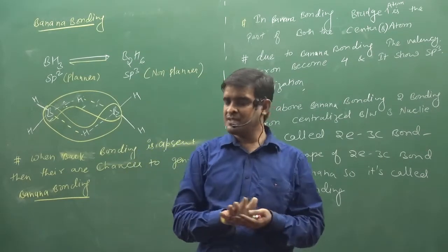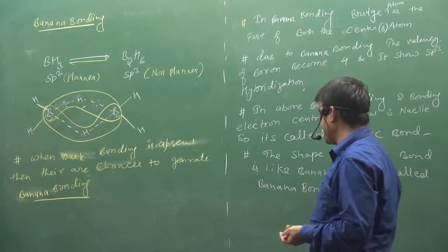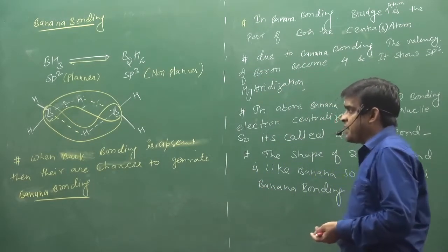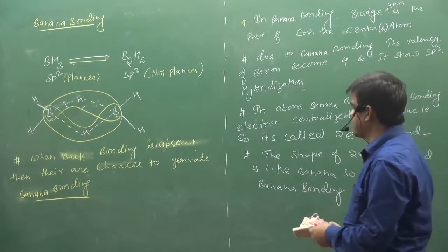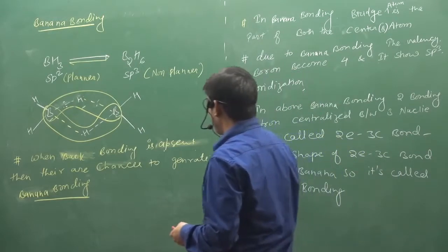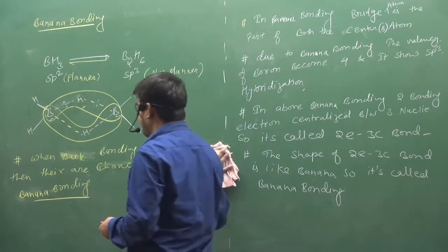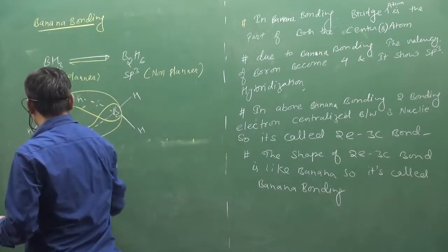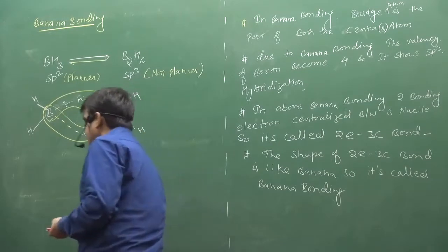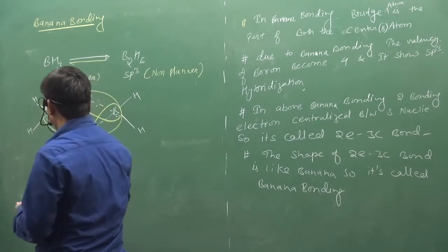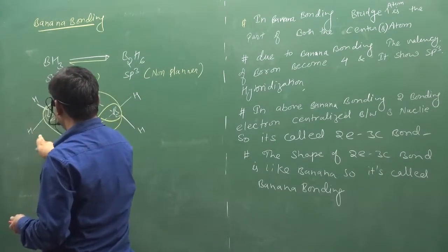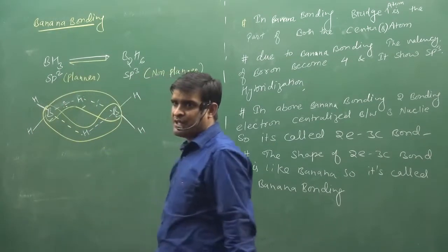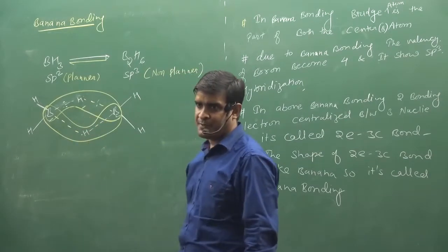This is an example of banana bonding. But what did the formation happen? It is a lot different and the properties changed. When we take this structure, we have some other points.